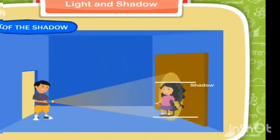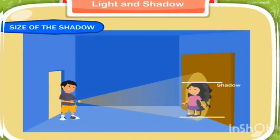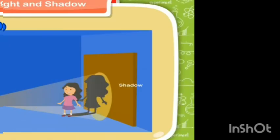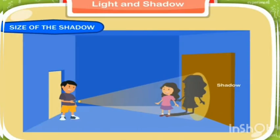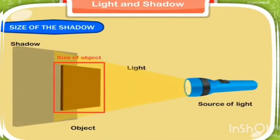Now ask your sister to come nearer to the source of light. We will see that the size of the shadow will increase. Now the size of the shadow is bigger than the size of your sister. So we learned that the size of the shadow depends upon the size of the object and the source of light.